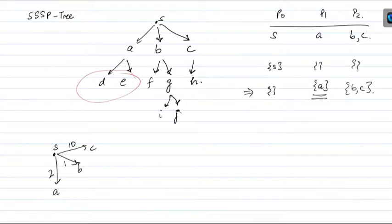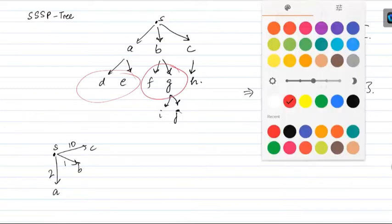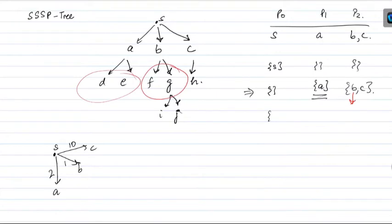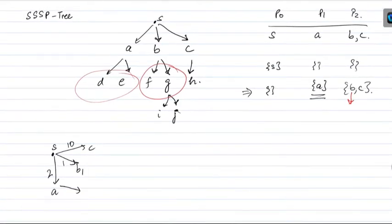P1 extracts the min, which is A, and explores all the neighbors of A, preparing messages for the respective vertices. P2 extracts the min, which is B, and traverses all the neighbors of B, sending messages to them. In the next iteration, let's say A and B could both be going to the same vertex E. If E is on P0, then P0 receives a message from both P1 and P2. Both try to do a relaxation operation on E, and P0 realizes the shortest distance is via A, so E becomes a child of A in the SSP tree.